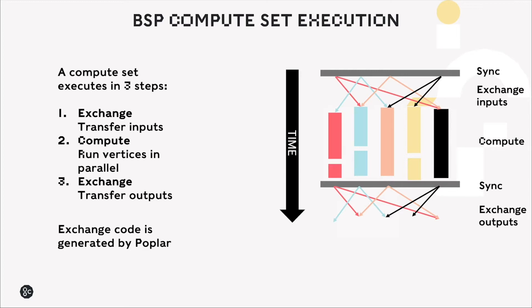Vertices on the respective tiles then run in parallel and afterwards we have another exchange where the outputs are then transferred to other tiles where they may be inputs to more vertices. In between these steps we have syncs to make sure that all of the threads that are running have now finished and any exchange code is generated by Poplar in the background.